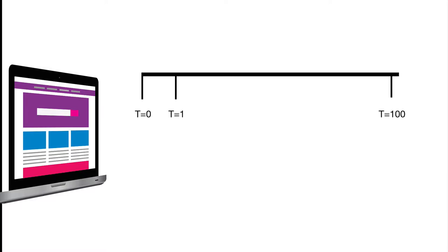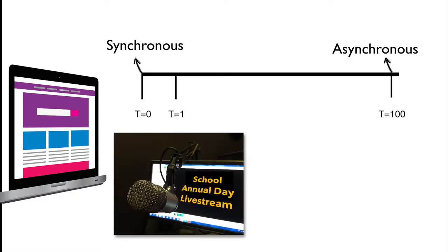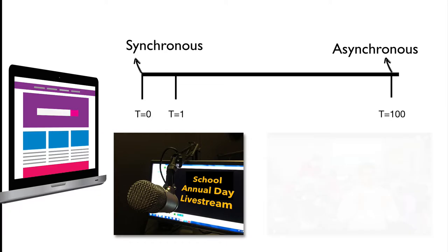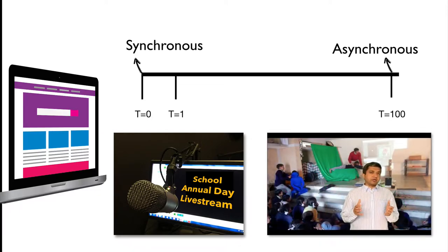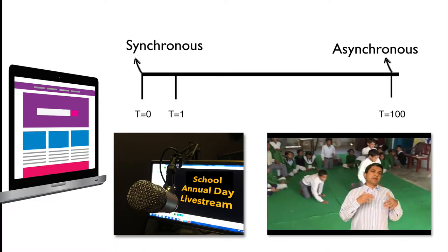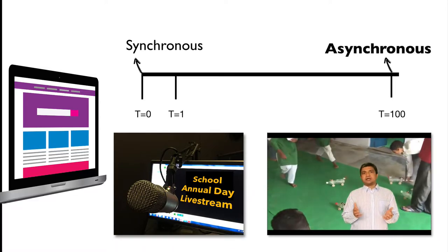When it comes to communication over time, we need to consider if our audience needs information to be consumed synchronously or asynchronously. For example, the annual day celebration in our school can be telecast live on the internet for parents, ex-students and other audiences — this is synchronous communication, where information is being produced and consumed simultaneously. On the other hand, a lecture by a teacher can be recorded and archived on YouTube so that the audience can view it whenever it is convenient for them — this is asynchronous communication.